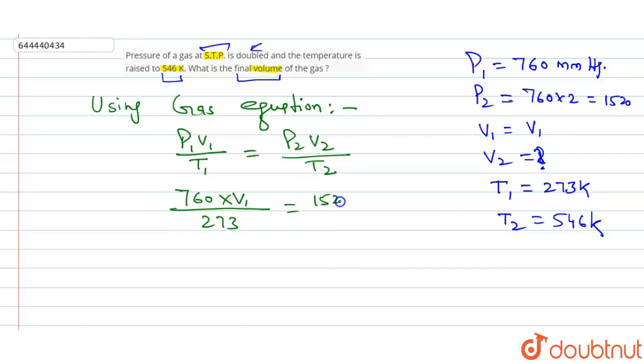P2 is 1520 and V2, V2 we have to find. I'll write V2 as V2 and T2 is 546. Okay, so I'll move all to the other side. So I'll write V2 is equal to... V2 will be equal to 760...